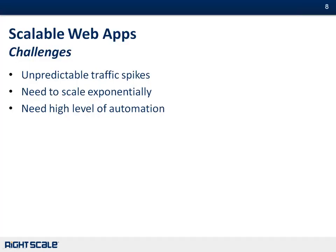Let's look at the challenges faced by a scalable web app. Typically, a scalable web app will experience unpredictable traffic spikes. If a link to your web application makes its way onto social media and becomes very popular, you'll get lots of traffic you weren't prepared for. As a result, you might need to scale exponentially — scale up your infrastructure very quickly to handle that extra load, and you typically need to do that with very few people, requiring a high level of automation.